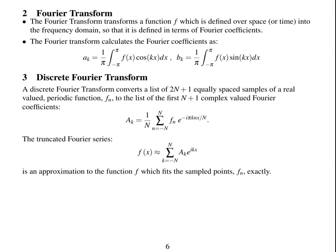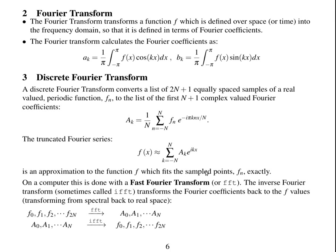A truncated Fourier series uses just the first n Fourier coefficients and is an approximation to the function f. If you sample at n points, the truncated Fourier series will fit the sample points exactly. In practice this is done on a computer using a Fast Fourier Transform, commonly called an FFT, and the inverse, called an IFFT, which transforms Fourier coefficients back into values of the function.